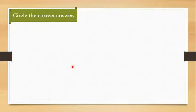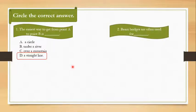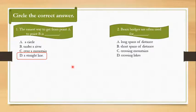Now we have another activity: circle the correct answer. The easiest way to get from point A to point B is: a circle, under a river, over a mountain, or a straight line. The answer is very clear, it's a straight line. The second is: beam bridges are often used for long spans of distance, short spans of distance, crossing mountains, or crossing lakes. Beam bridges are the simplest ones and we always use them for short spans of distance.